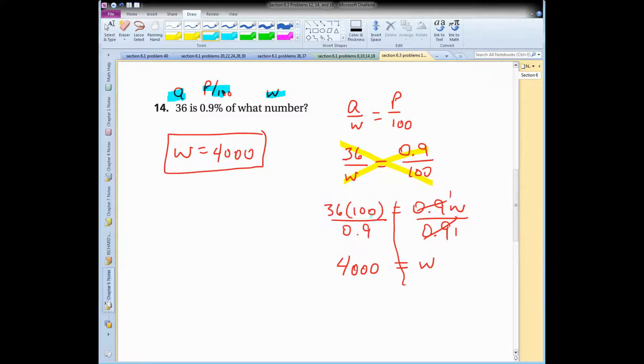So I just do the work, cross those products, and then I have an equation, and I use a division property of equality. I divide both sides by 0.9. Plug into my calculator, and I get W, or the whole, equals 4,000.